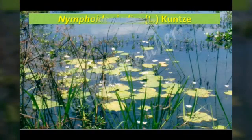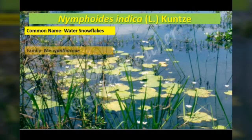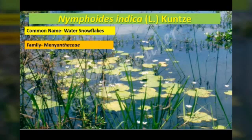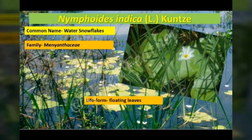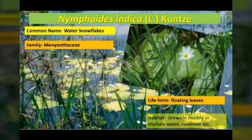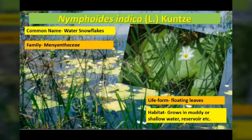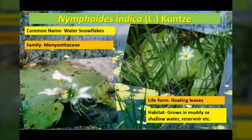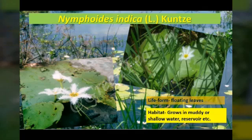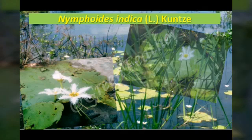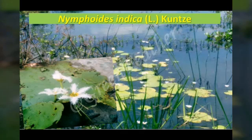Nymphoides indica, commonly known as the water snowflake, belonging to the Menyanthaceae family, is an evergreen perennial plant growing in mud and shallow water. It is rooted in mud with stems and leaves floating over the water surface, bearing beautiful snowflake-like flowers and bright green heart-shaped leaves. Although bearing some resemblance to water lilies, they are not related.